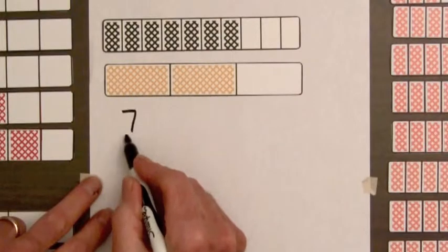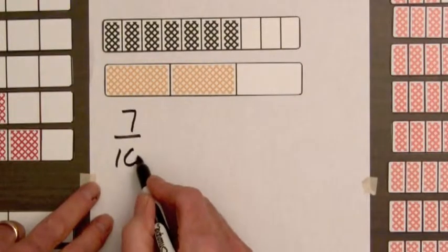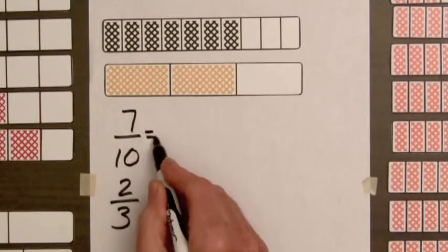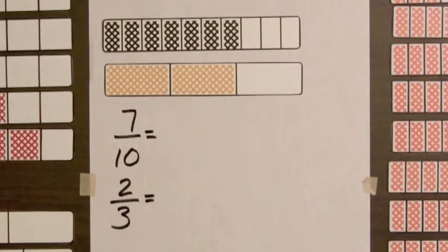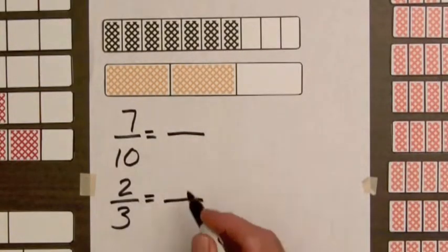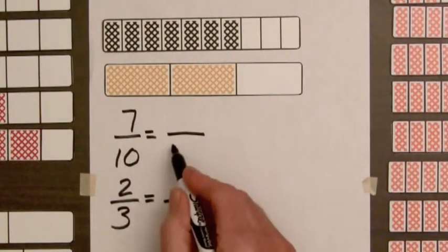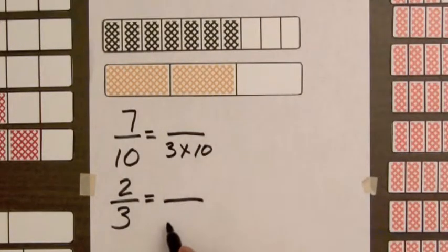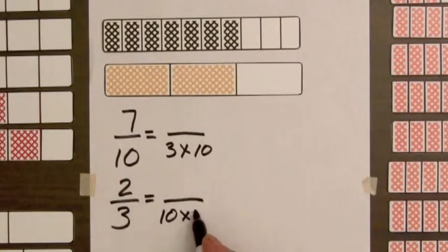We have 7 tenths and 2 thirds. We are going to replace these by fractions having the same denominator. We know we can get that by multiplying 10 times 3 or 3 times 10, so let's put down here 3 times 10, down here we will have 10 times 3.